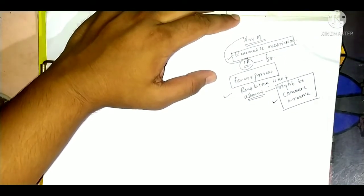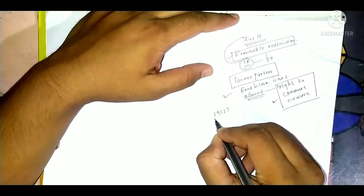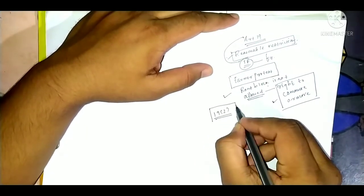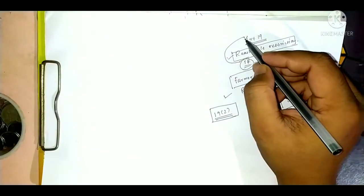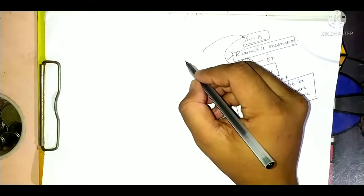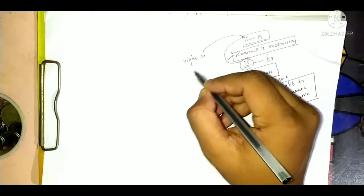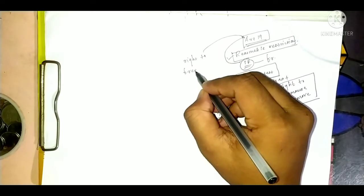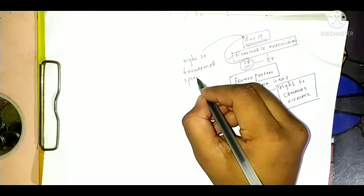What is reasonable restriction? In Article 19 clause 2, there are some reasonable restrictions. What do you mean by reasonable restriction? That means, as Article 19 gives us the right to freedom of speech and expression and some other rights.